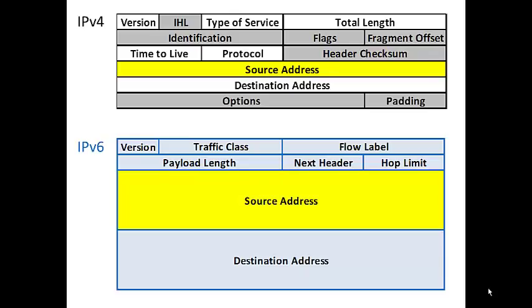The source address is 32 bits in IPv4 and 128 bits — four times longer — in IPv6. In IPv6, above the source address there are only two rows of data, which is only eight bytes besides the source and destination addresses, so the header is definitely streamlined. The destination address is also four times longer at 128 bits in IPv6. Options and padding have been moved into the payload section, pointed to by the next header field.